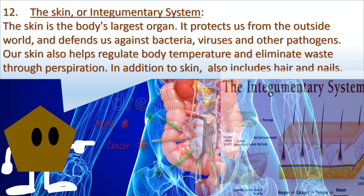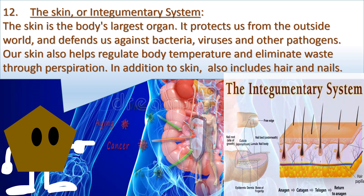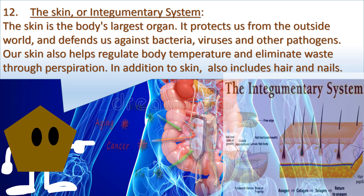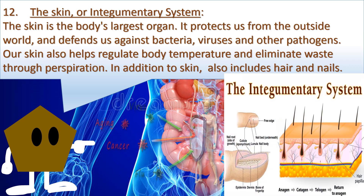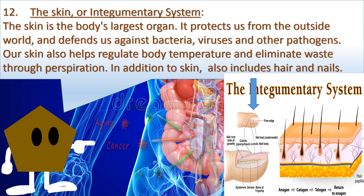12. The skin or integumentary system. The skin is the body's largest organ. It protects us from the outside world and defends us against bacteria, viruses, and other pathogens. Our skin also helps regulate body temperature and eliminates waste with perspiration. In addition to skin, it also includes hair and nails.